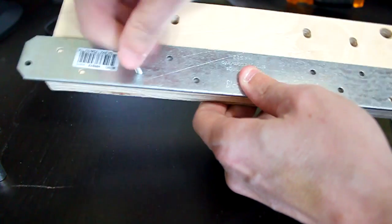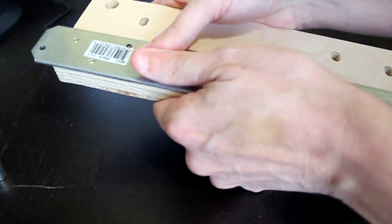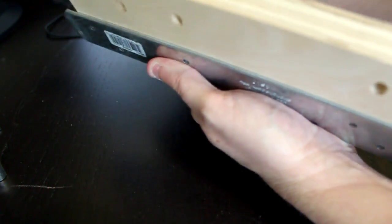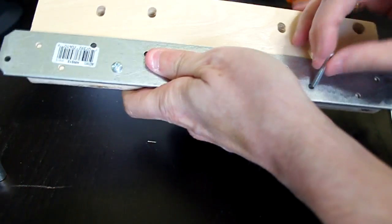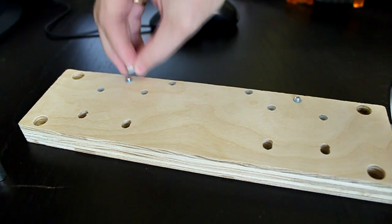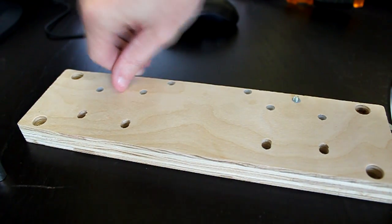Insert number 8 screws measuring 1 inch in length and be careful not to push out the spacers as you insert them. Consider starting with 2 screws and then add nuts to hold the position of the rail while putting in the rest of the screws.